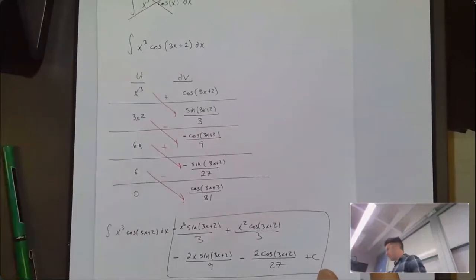This trick — where the original integral reappears and you solve algebraically — applies to integrals of the form e^(ax)·sin(bx) or e^(ax)·cos(bx). You could also have a linear factor like bx+c and still do the same process.